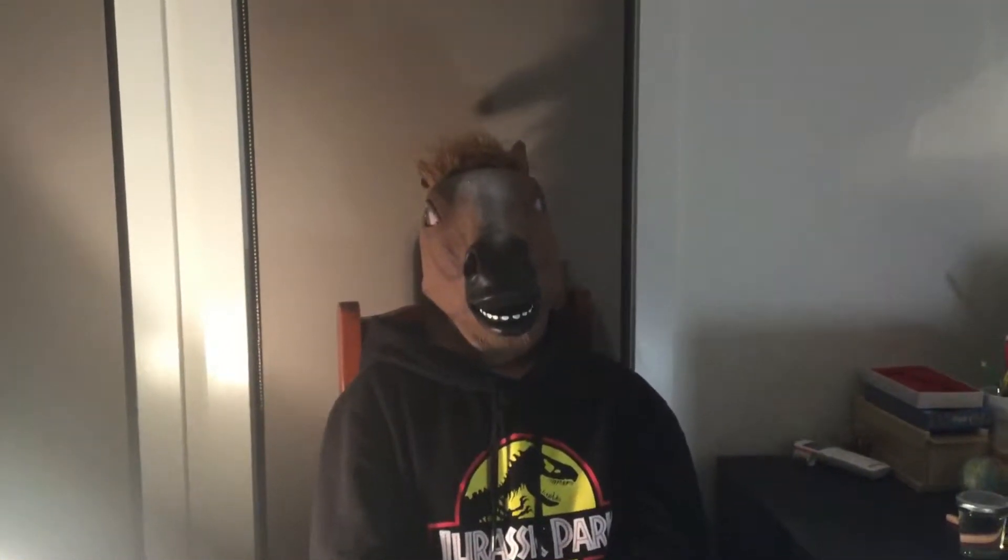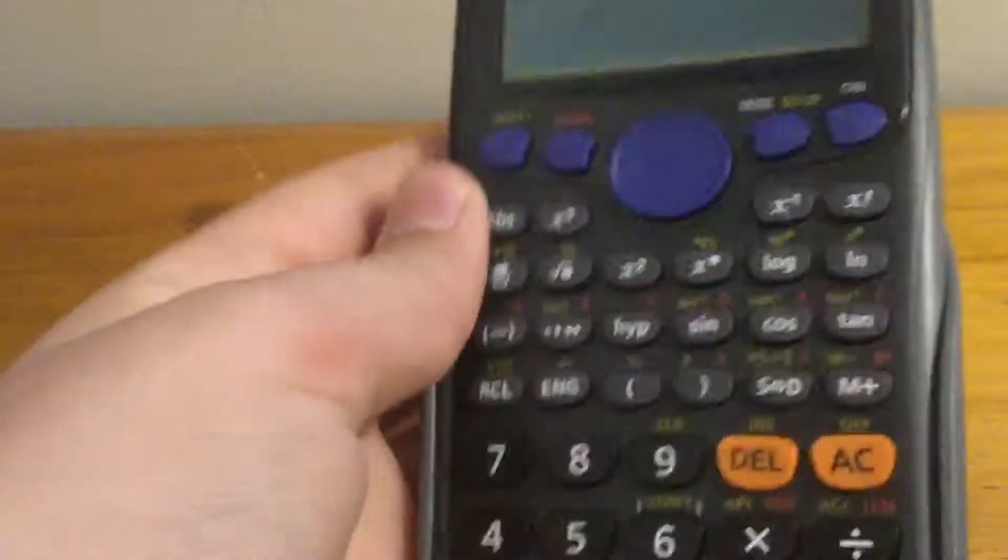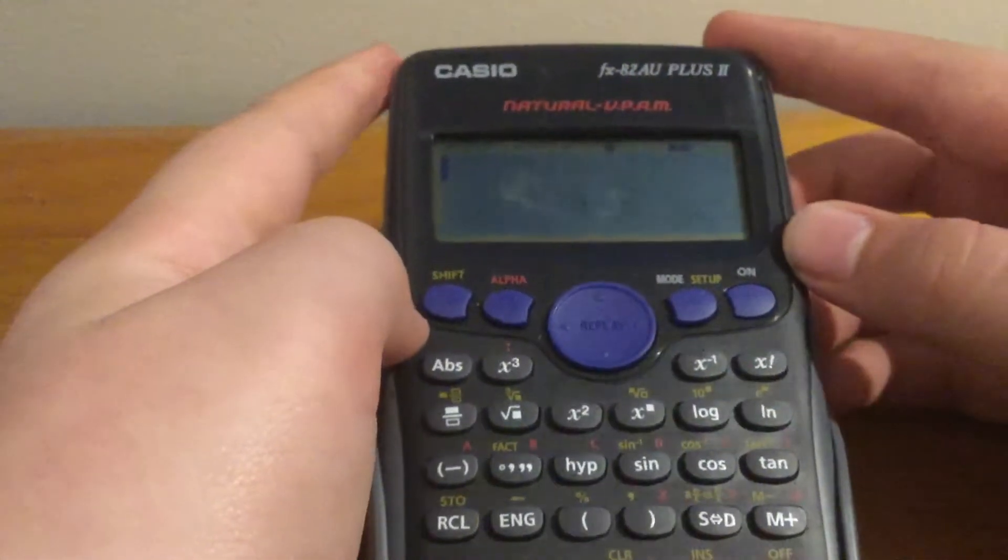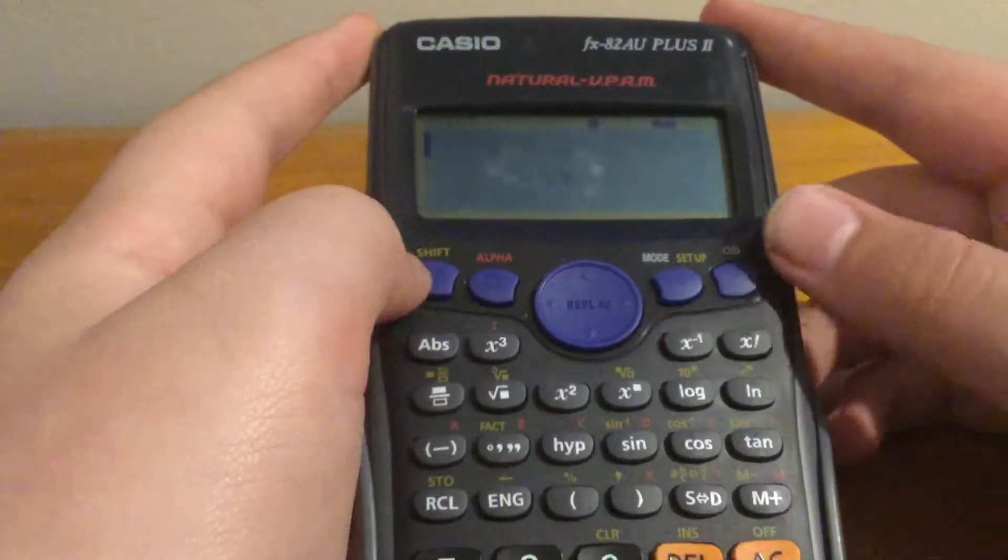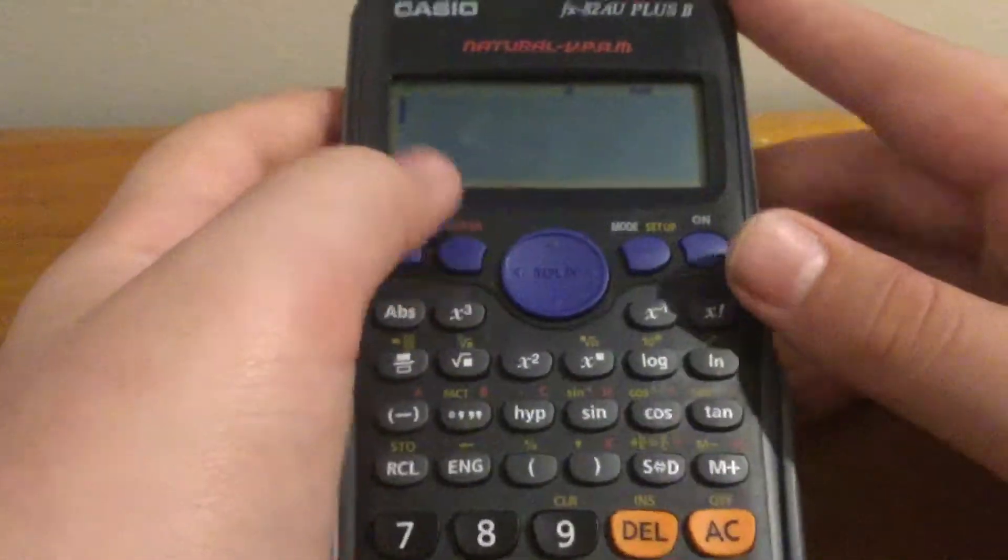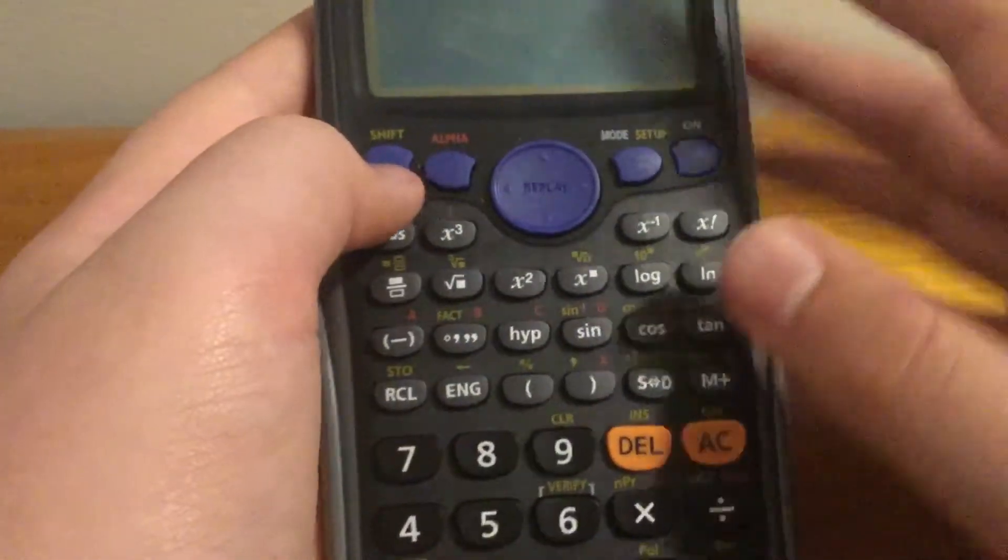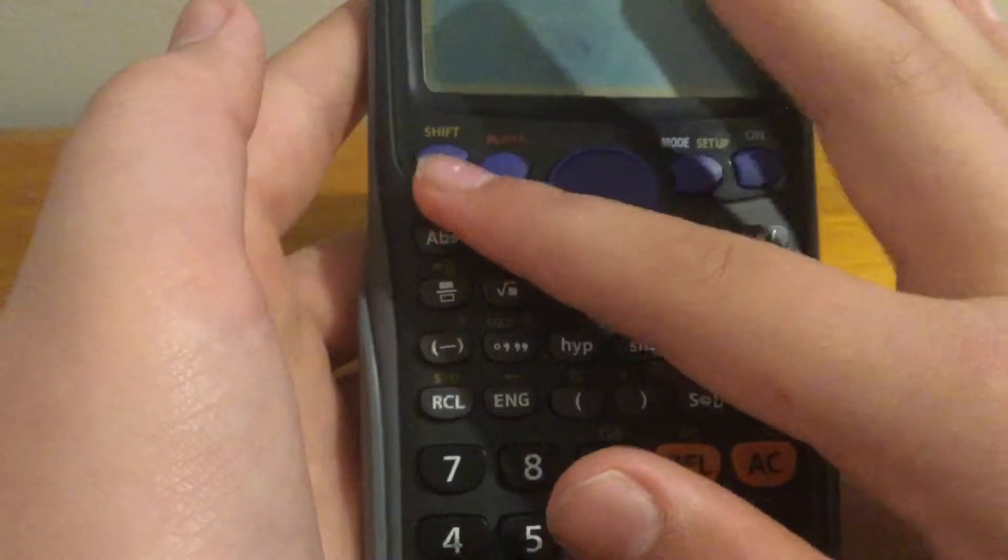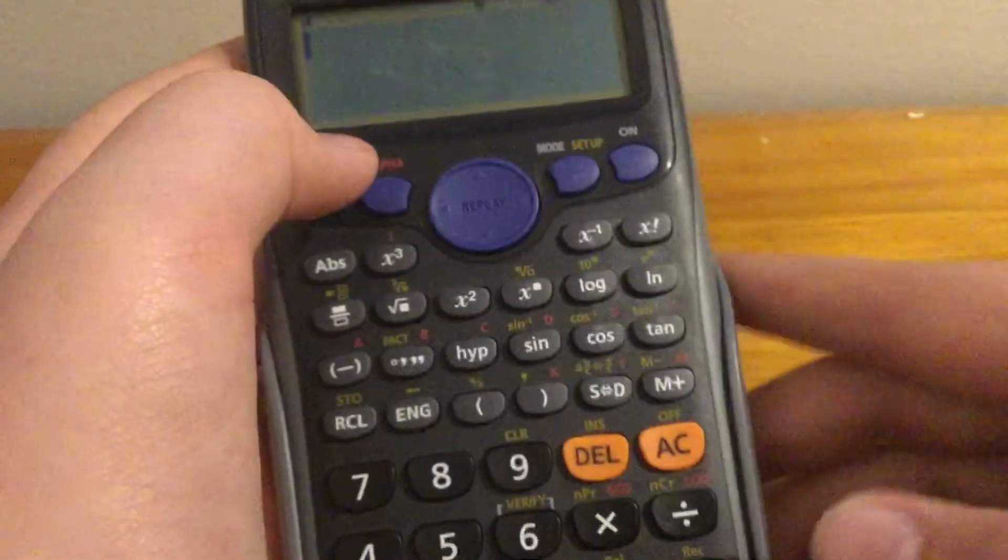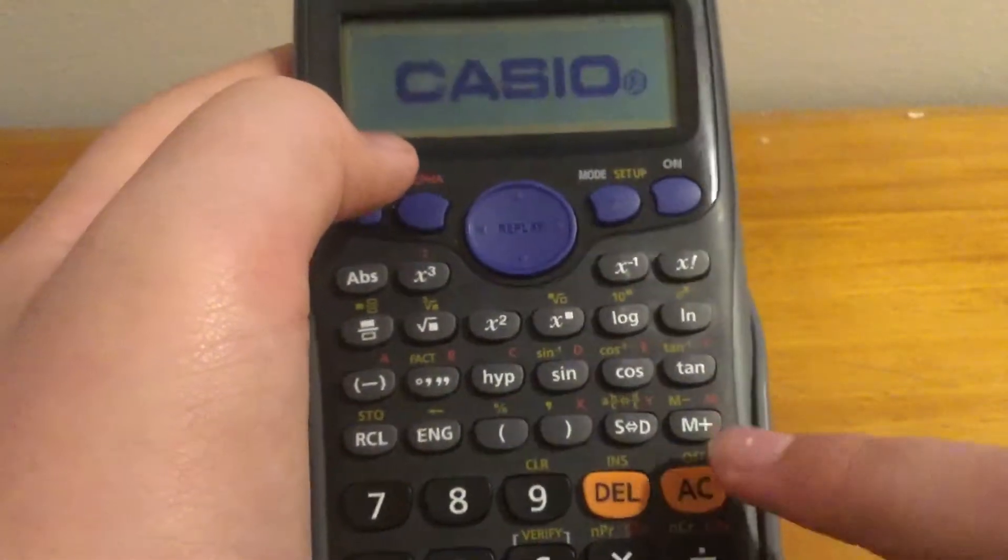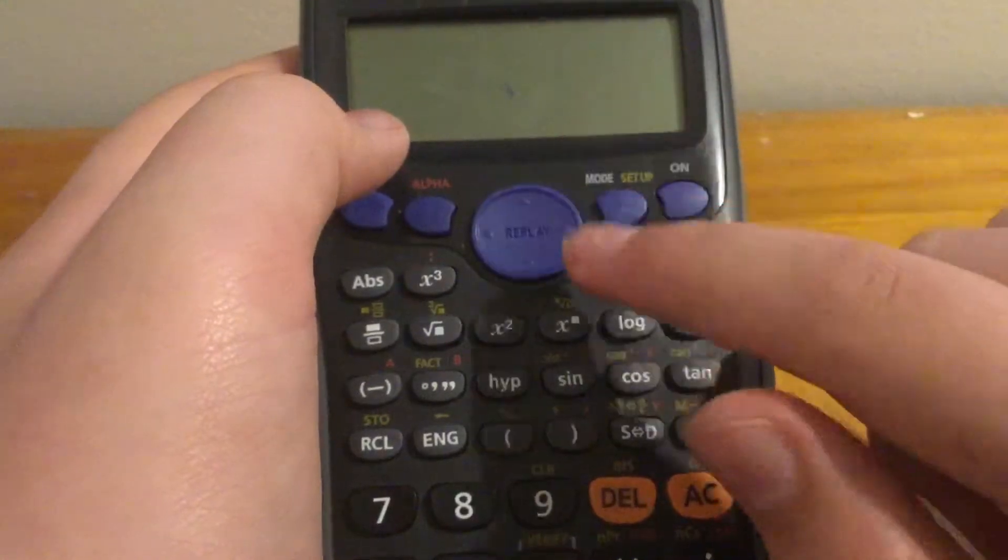So without further ado, let's get into this video. Okay guys, I've got the scientific calculator here, and the first step is if the calculator is on, you're going to have to turn it off. So you're going to press Shift and then AC. That turns off the calculator.